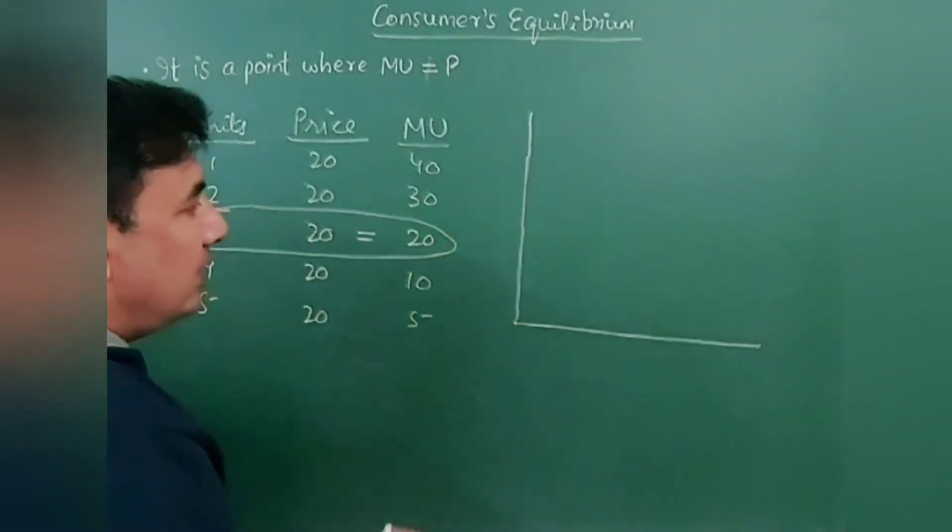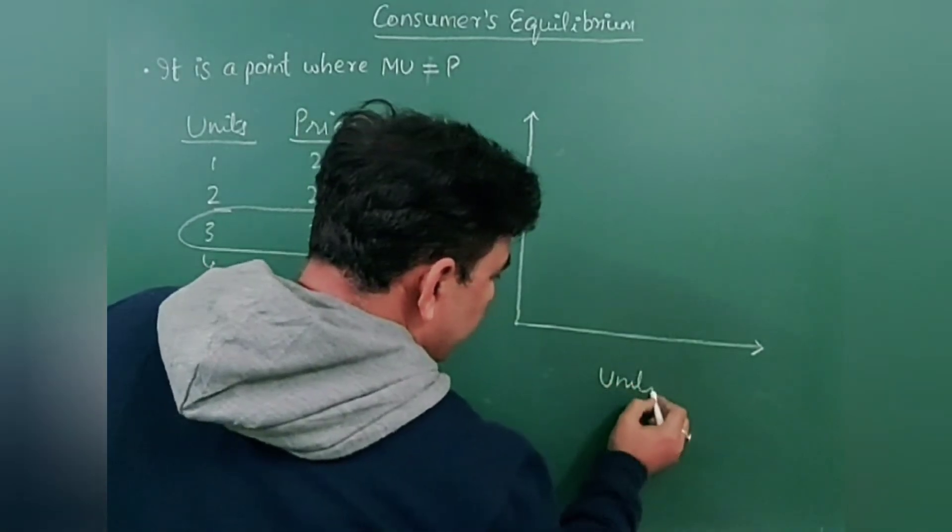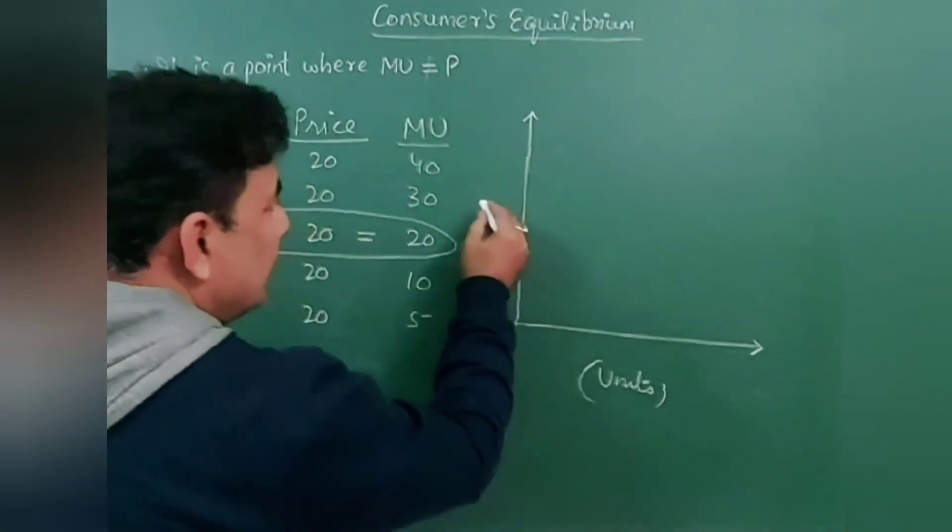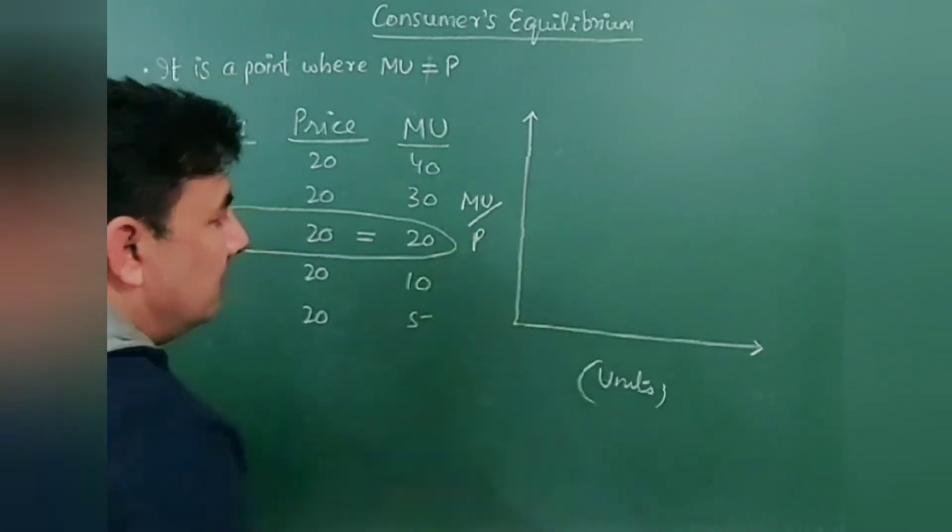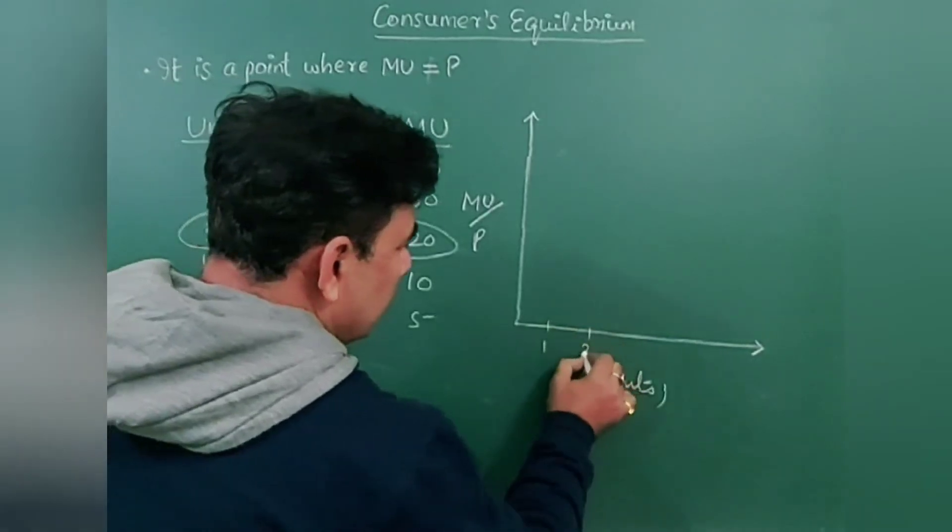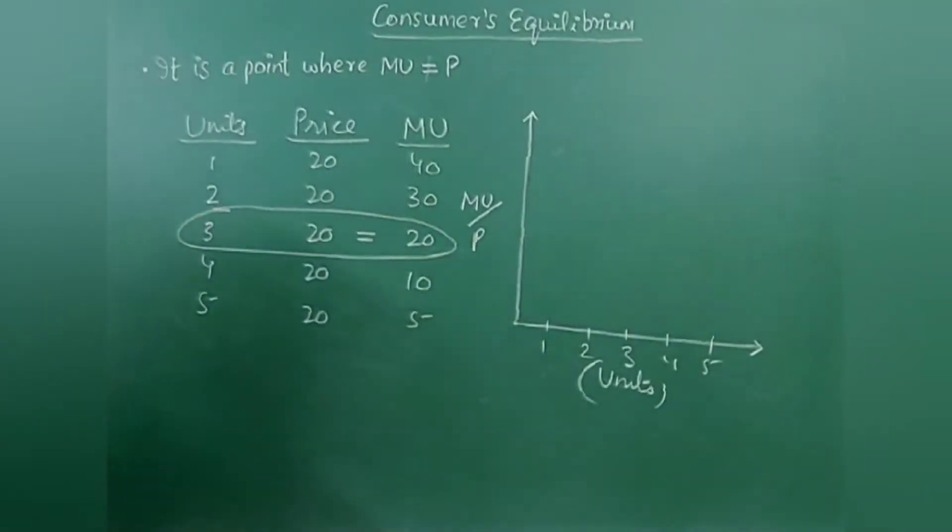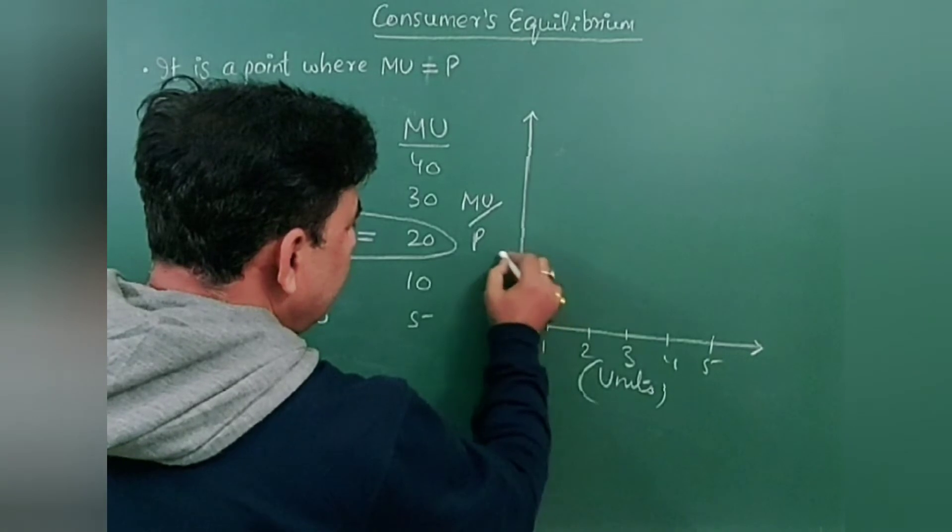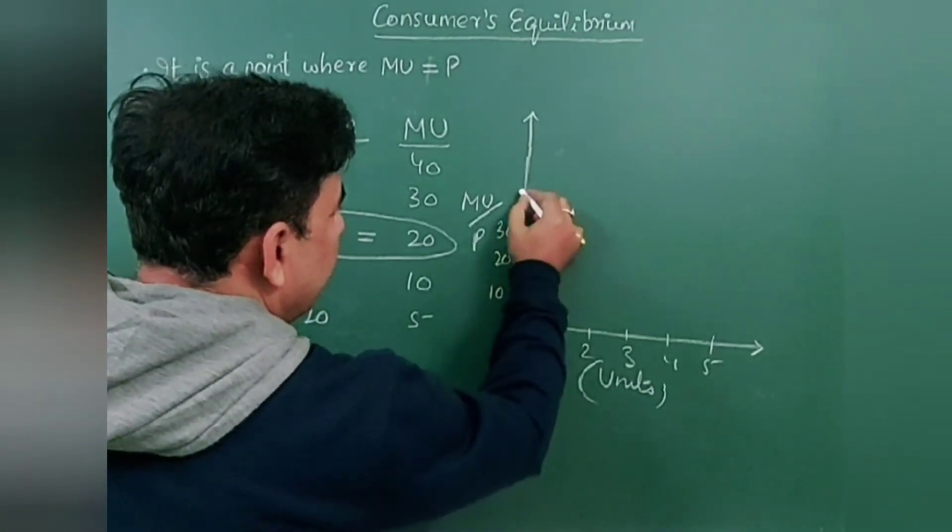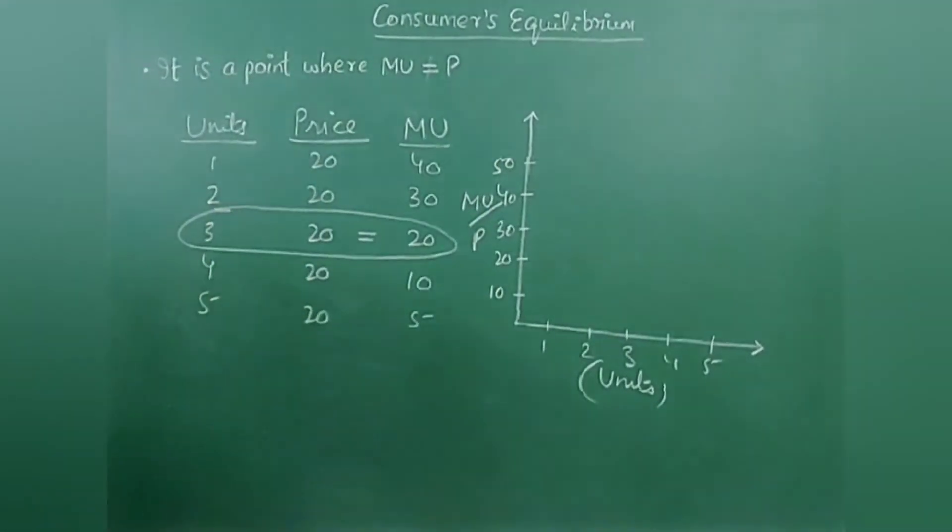Now when you draw this on a graph paper, this axis is units consumed and this is marginal utility and price. One, two, three, four, and five—there are five units. And let's say the prices, we can start it from 10, 20, 30, 40, and 50. Maximum price is 40, so you can draw up to 40 or 50.